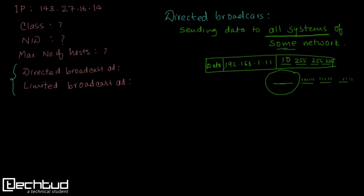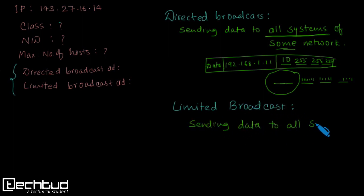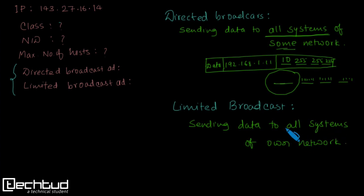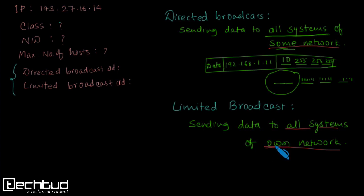In case of limited broadcast, the data packet is sent to all systems of your own network. The key distinction is: directed broadcast targets some network, while limited broadcast targets your own network.